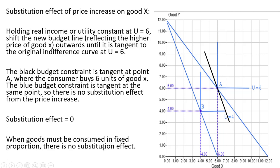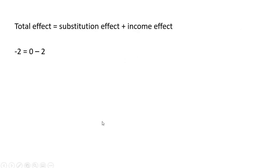When goods must be consumed in fixed proportions, there is no substitution effect. So to sum up: the total effect is minus 2, which equals the substitution effect plus the income effect. The substitution effect is 0, and the income effect makes up the whole total effect.